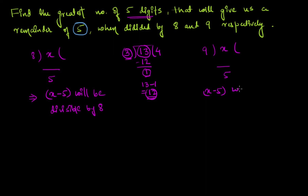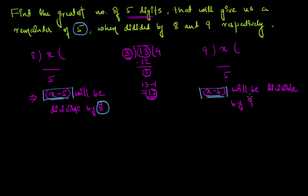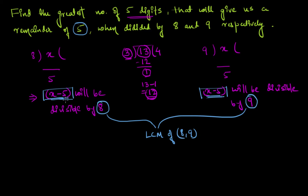So I can say that x minus five will be divisible by nine as well. Now x minus five is the same number in both cases, so I want this common number to be divisible by eight and nine both. This means x minus five should be divisible by the LCM of eight and nine, because that is the only way to get one common number divisible by both. The question says I want a single number that leaves a remainder of five when divided by both eight and nine.